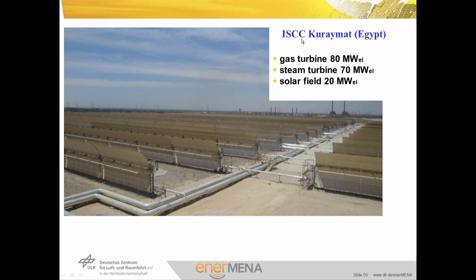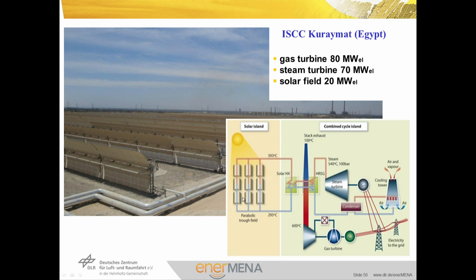The ISCC Kuraymat power plant in Egypt uses integrated solar power into combined cycle. A gas turbine of 80 megawatt electrical power and a steam turbine of 70 megawatt electrical power are used, with 20 of the 70 megawatts produced by the solar field. The gas turbine exhaust gas goes to a heat exchanger to produce steam for the steam turbine, and the solar field also connects to this heat exchanger to contribute heat for steam production.